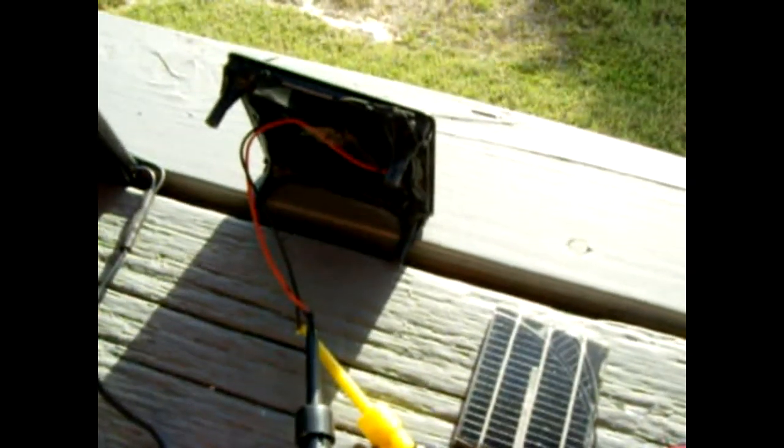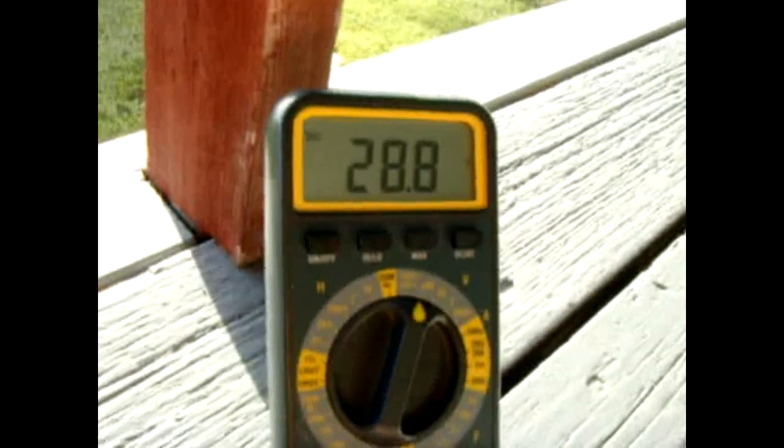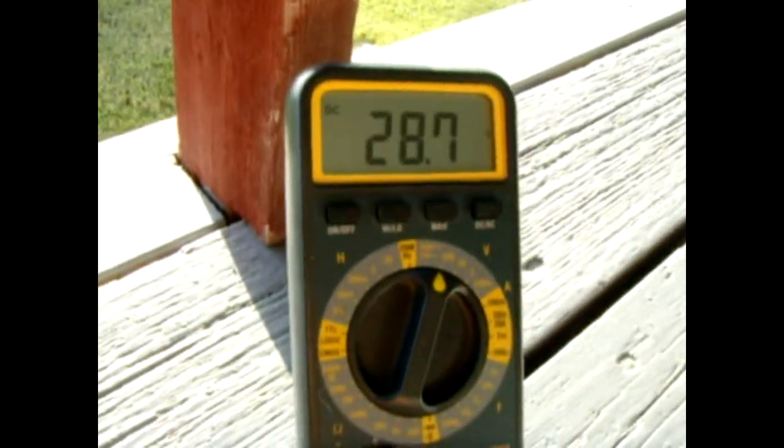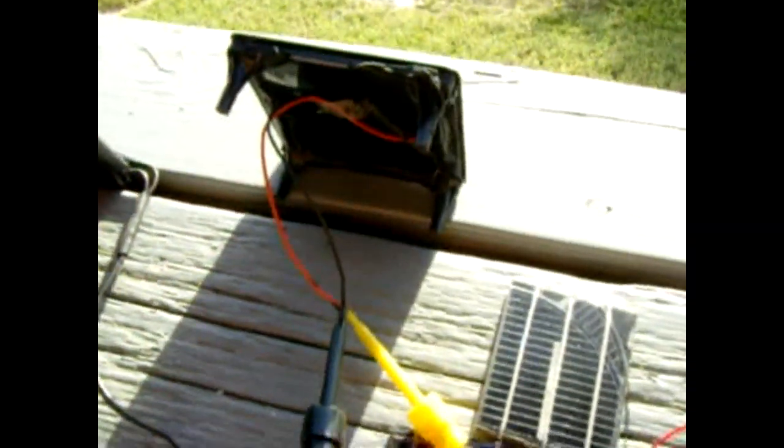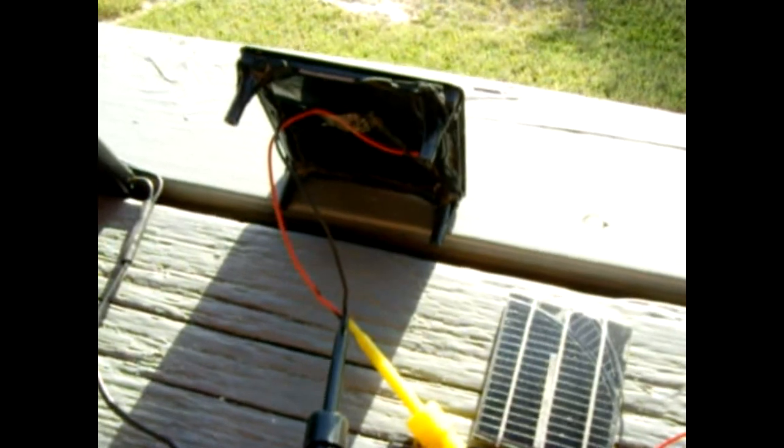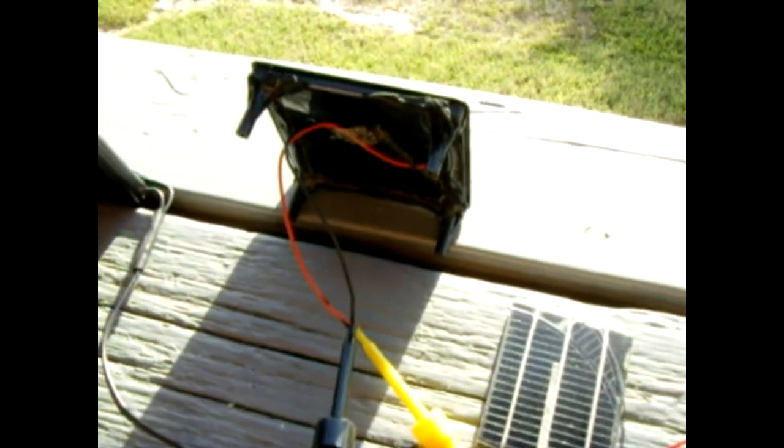Now this panel doesn't have a lot of current, maybe eight milliamps, because these amorphous type don't put out as good. So the current output at the high voltage is fairly low. So if I was to use this to charge a battery or to power something at a higher voltage, you want to go with a polycrystalline.